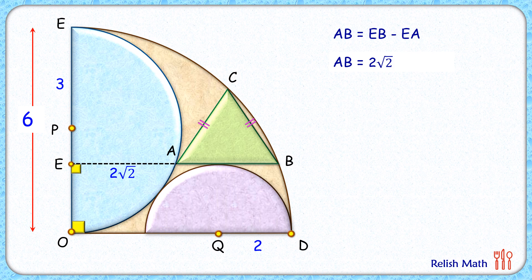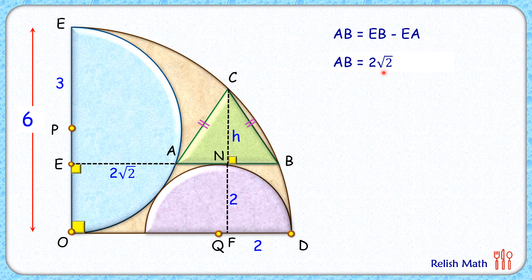To find the height of the triangle, let's extend CN to meet the quadrant at point F. The length NF is the distance between the two parallel lines EB and OD, which equals the radius of the semicircle, so NF is two centimeters. In an isosceles triangle, the altitude is also the median, so AN equals half of AB. AB is two root two, so AN equals root two centimeters. Thus, the full length EN is two root two plus root two, or three root two centimeters, and OF is also three root two centimeters.